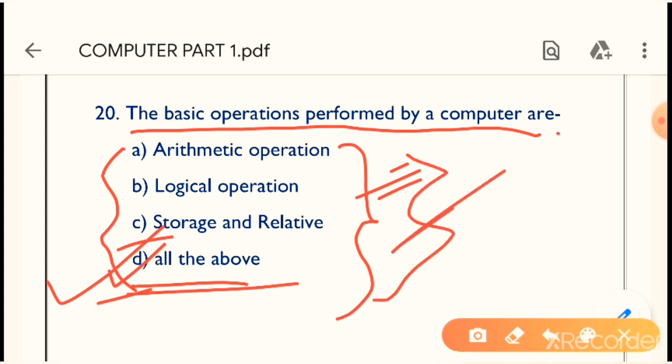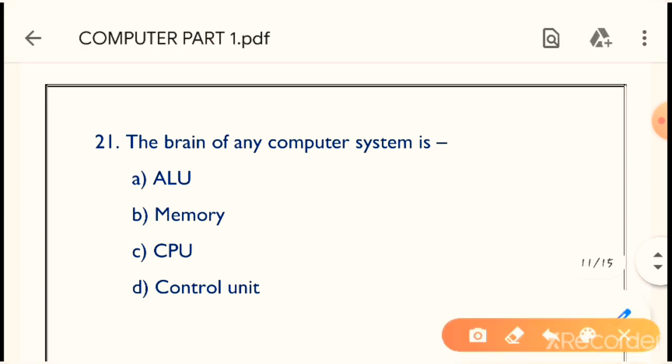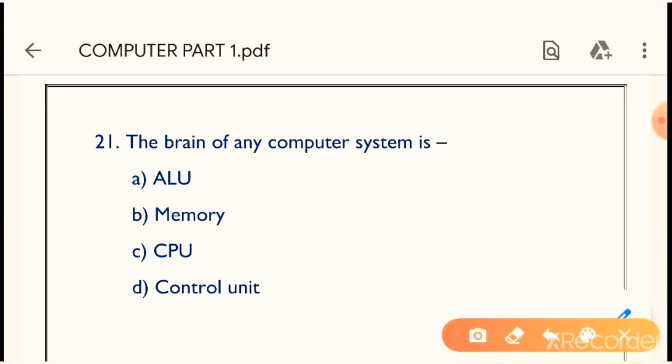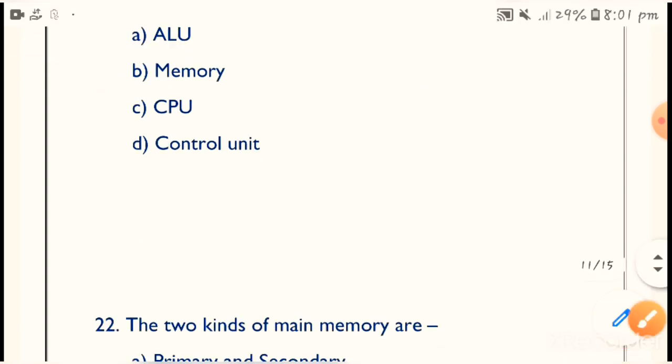Next question: The brain of any computer system is what? The correct answer is CPU. CPU is the brain of any computer system. Without CPU we cannot process the computer system. The full form of CPU is Central Processing Unit.